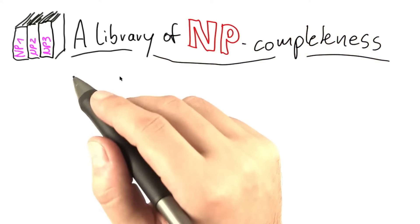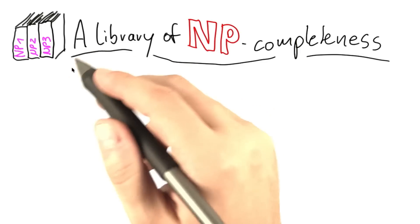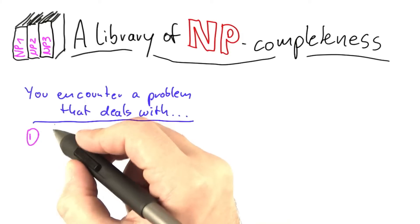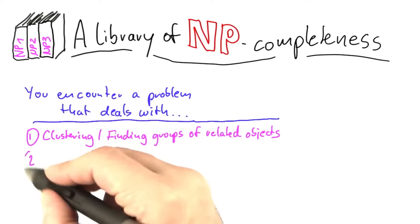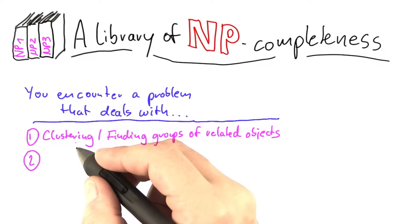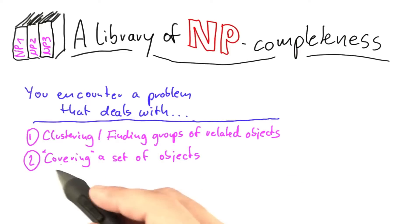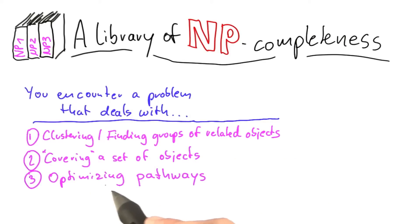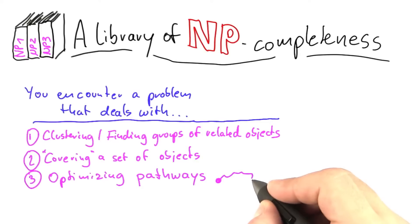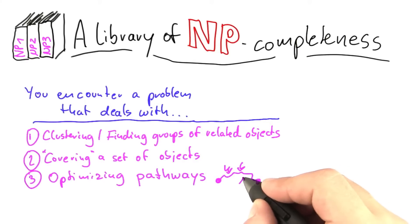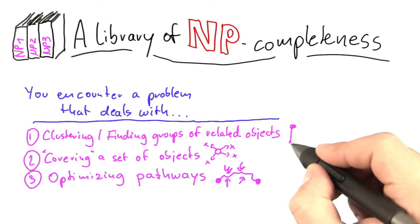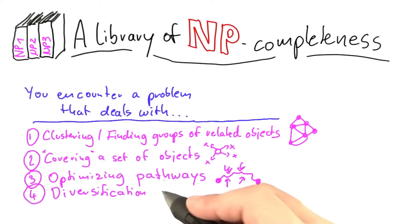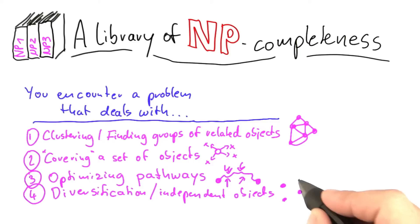Now let's see if you already have an intuition about which NP-complete problems would be most useful to show the NP-completeness of other problems. Say you encounter a problem that deals with clustering or finding large groups of related objects, or a problem that deals with covering a set of objects as efficiently as possible — selecting a few objects that in some way cover other objects in the set. Or you could encounter a problem dealing with optimizing pathways, getting from one point to another with constraints to meet. And finally, a problem about diversification — large groups of independent objects that have nothing to do with each other.